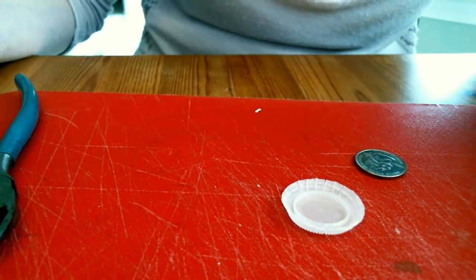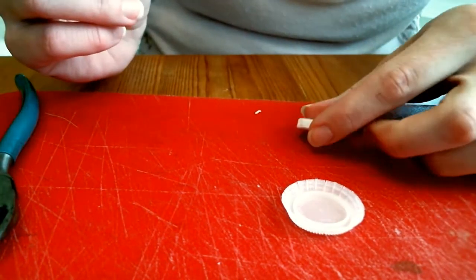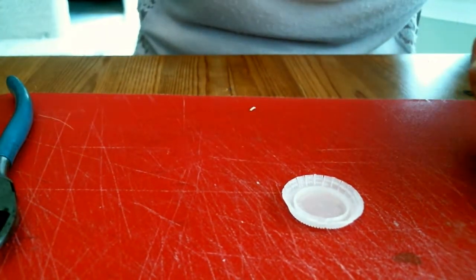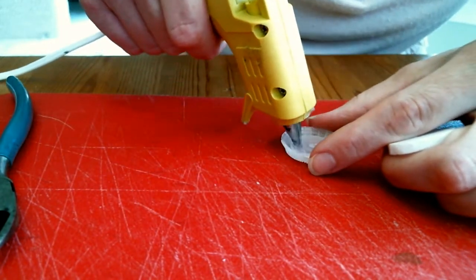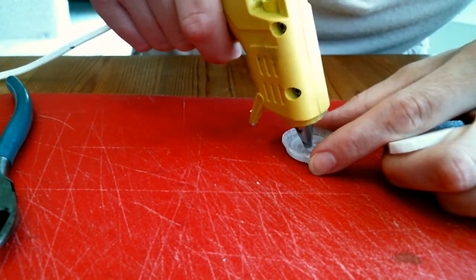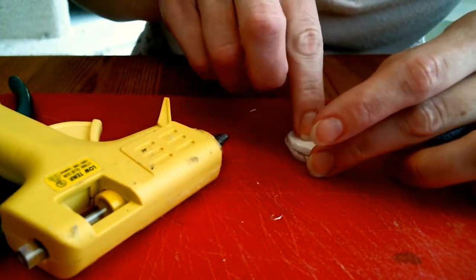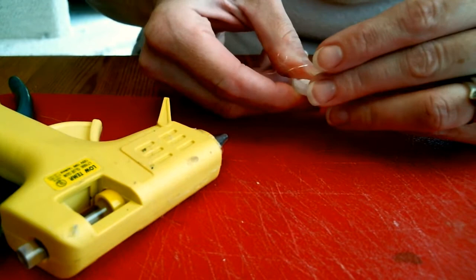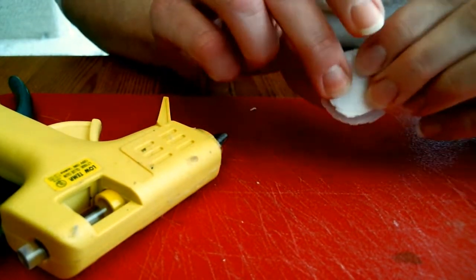And I traced it over some foam board and got a pre-cut circle done. So what I'm going to do is take the pre-cut circle of foam board and glue it into the base of the bottle cap. And that way, it gives it just a little bit more lift so that the figures have more of a base to work on, all right?